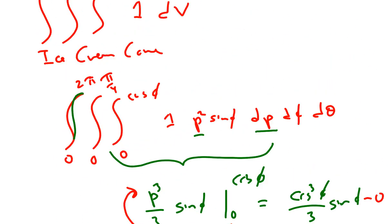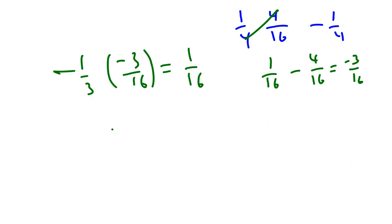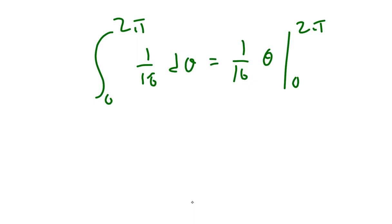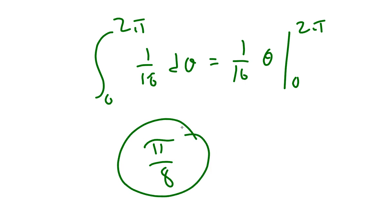The final integral is from 0 to 2 pi of 1/16 d theta. The anti-derivative is 1/16 times theta, evaluated from 0 to 2 pi. Plugging in 2 pi gives 2 pi times 1/16, which is pi over 8. The answer is pi over 8 — the same answer as before, but with quite a few fewer steps. This is probably the way to go with spherical coordinates in this case. Hopefully this problem illustrates how you choose between coordinate systems. Thanks for watching.